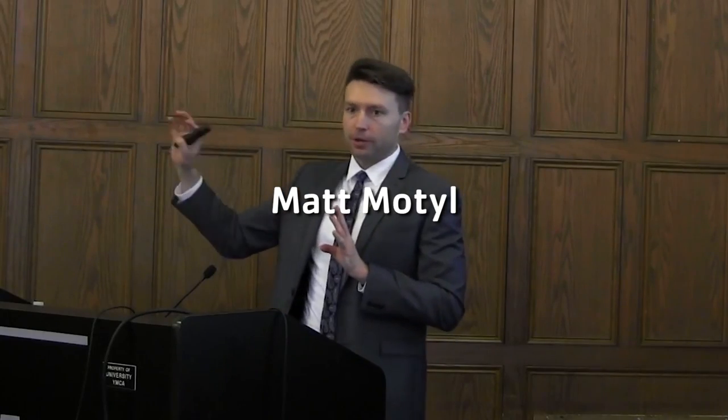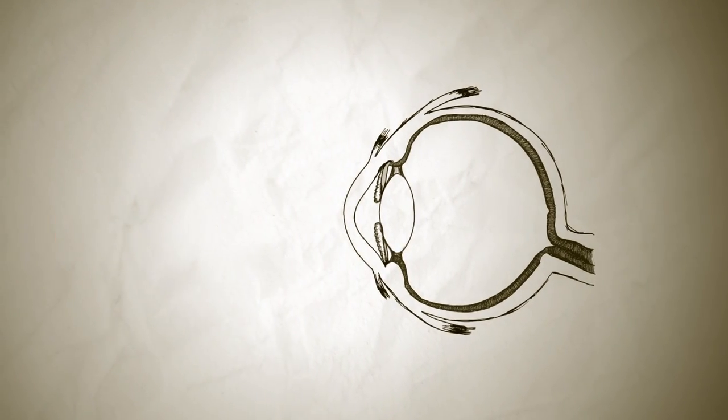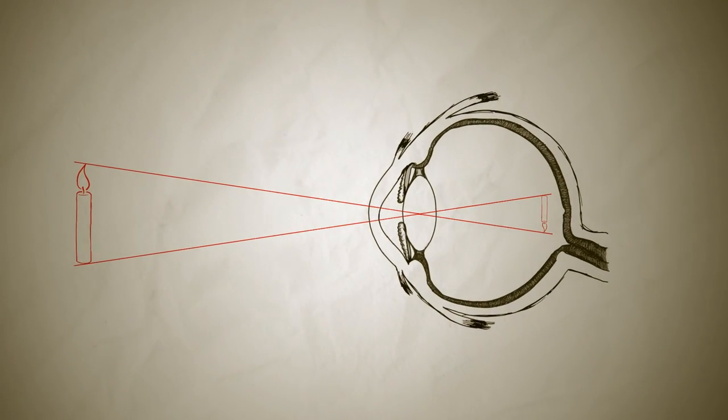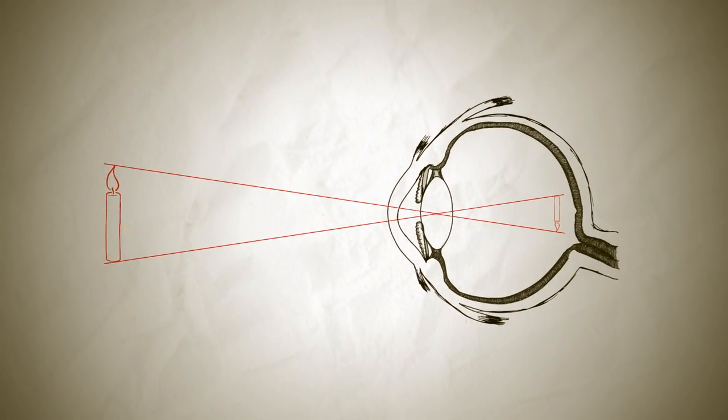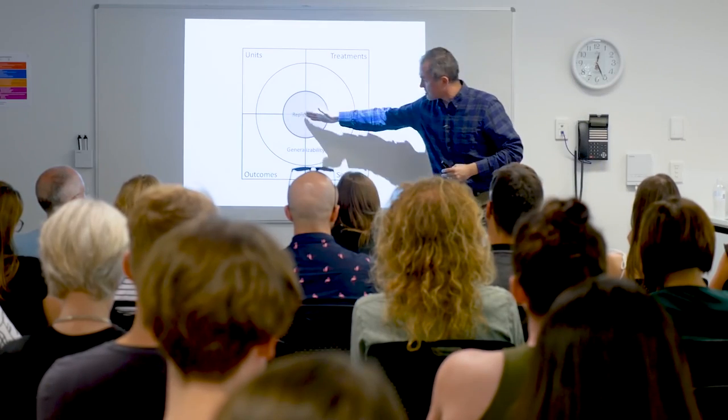Brian Nosek and Matt Modell were fascinated by political ideology. Specifically, they wondered whether how we physically see the world affects how we politically see the world. Being scientists, they set up an experiment to test this.